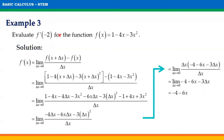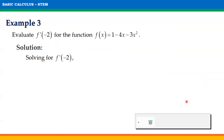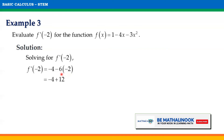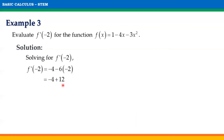However, remember that we are evaluating f prime of negative 2, and what we have is f prime of x. Therefore, to evaluate f prime of negative 2, we substitute negative 2 to the variable x of the resulting derivative. Thus, f prime of negative 2 is equal to negative 4 minus 6 times negative 2. Negative 6 times negative 2 is equal to positive 12, so we have negative 4 plus 12. Finally, the value of f prime of negative 2 is equal to 8.